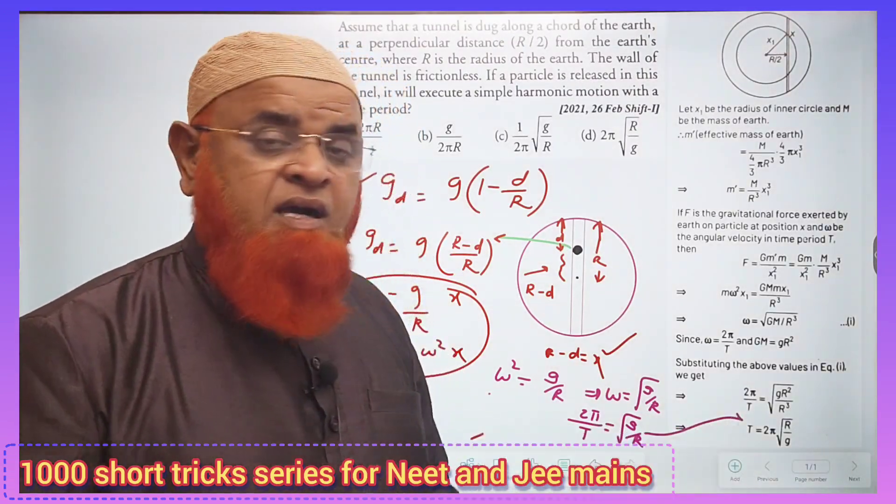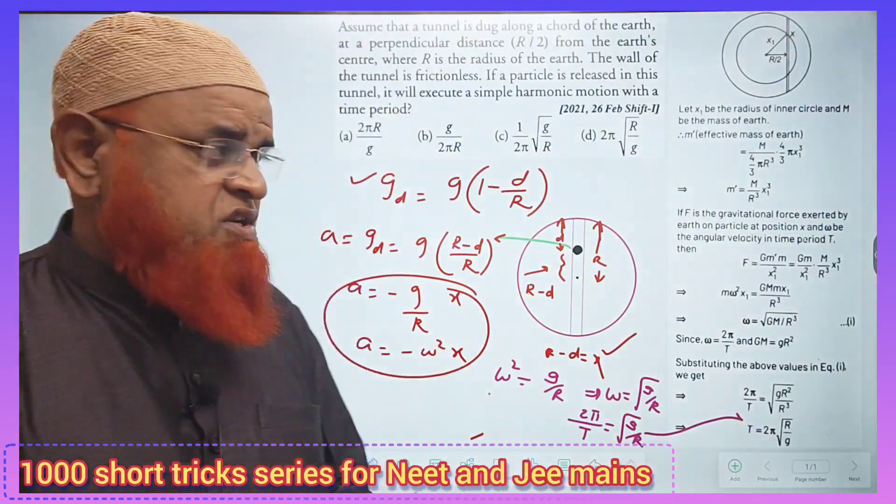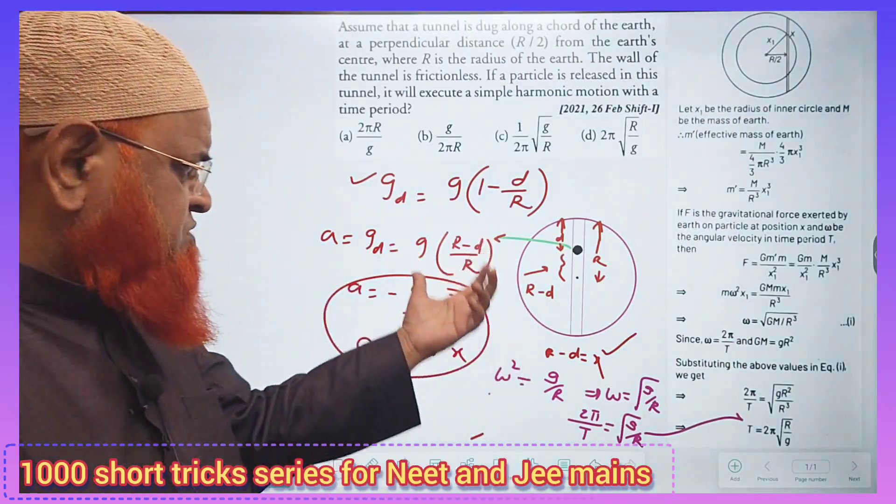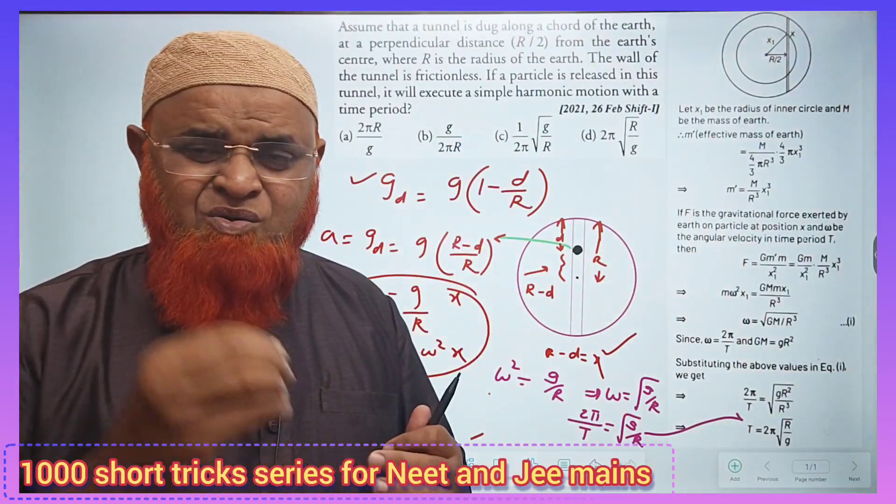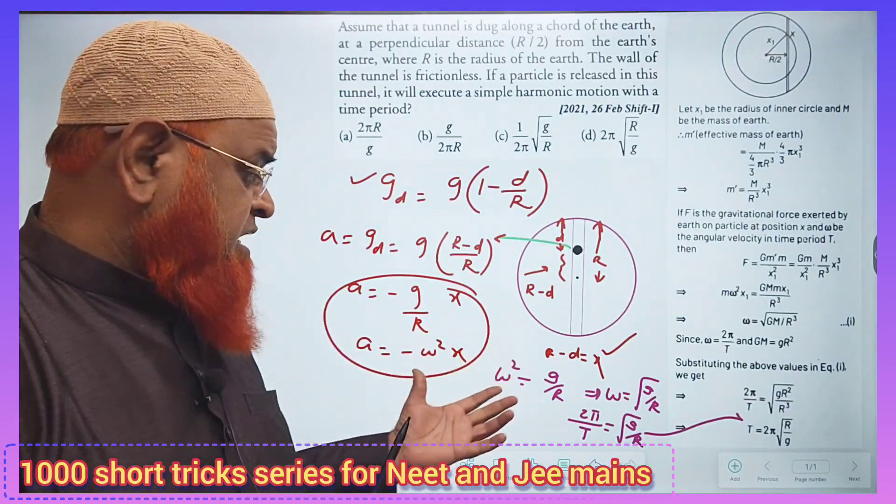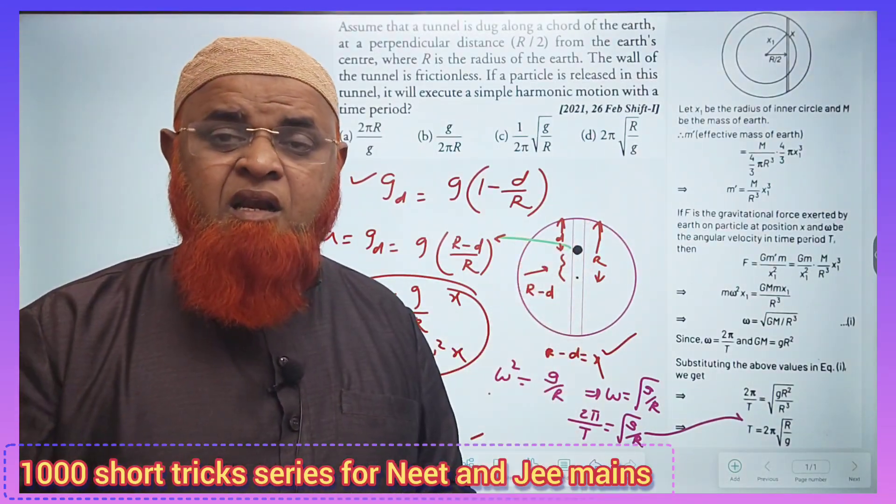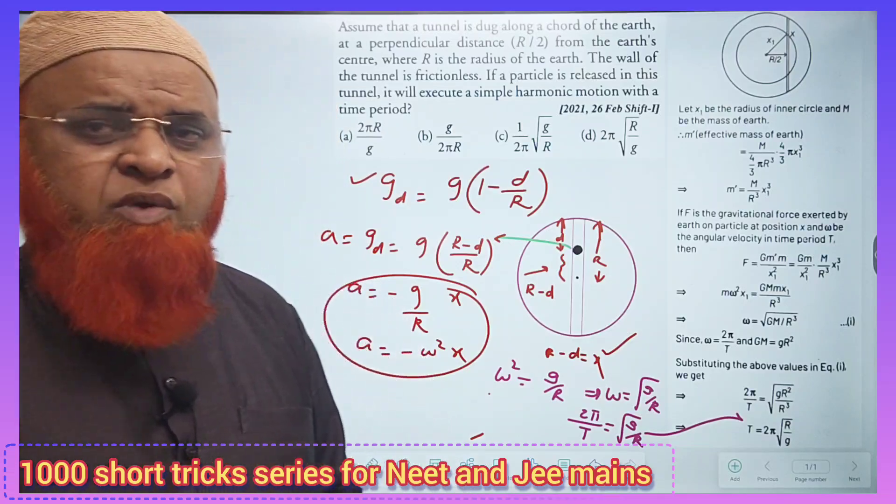The final step is time period equals 2π times square root of L/g. Instead of doing all these steps, you can just follow this shortcut method to find the time period of oscillation of a body inside the tunnel which is dug inside the Earth. Thank you very much, have a nice day.